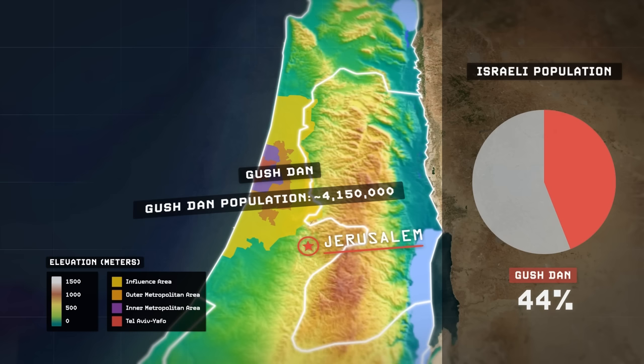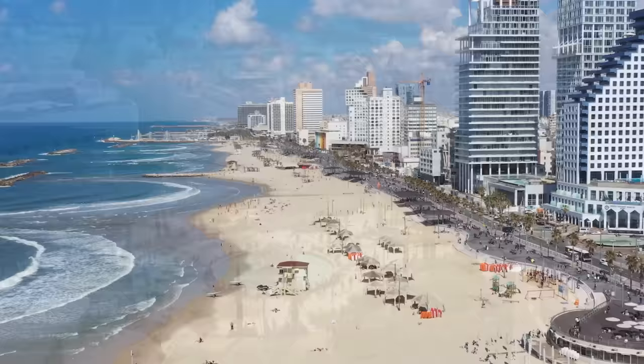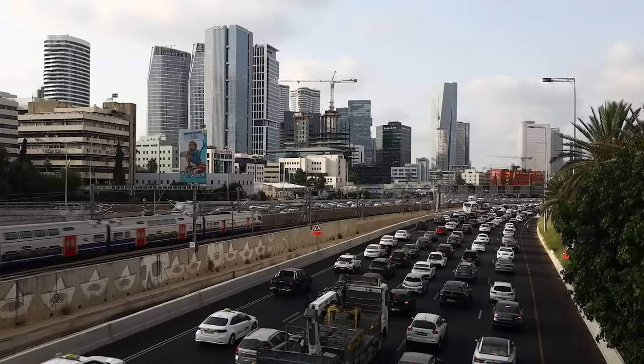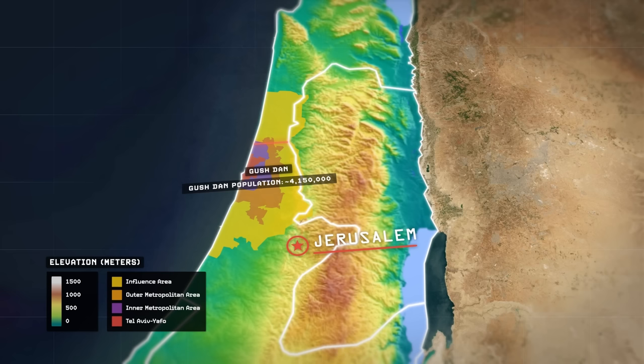Israel's actual civilizational core is located across the narrow and low coastal plain between the Mediterranean Sea and the hills of the West Bank. This narrow coastal plain includes the Tel Aviv metropolitan area, known in Hebrew as Gushdan — home to more than 4,150,000 people today, about 44% of the entire Israeli population, and representing roughly half of the entire Israeli economy. Despite Jerusalem being the country's political and religious capital, Tel Aviv is the country's economic, commercial, cultural, and industrial core. Israel's narrowest geographic point is just to the north of the Gushdan region, in between the West Bank and the Mediterranean Sea — a gap less than nine miles wide.